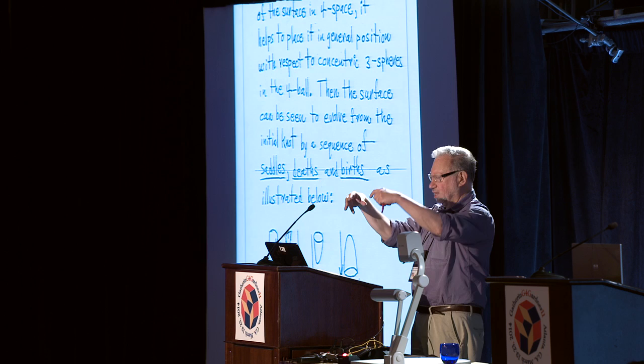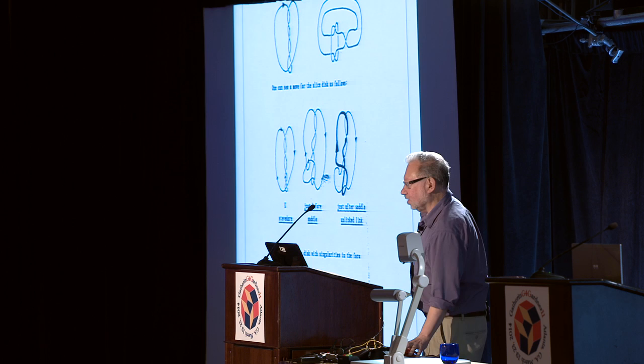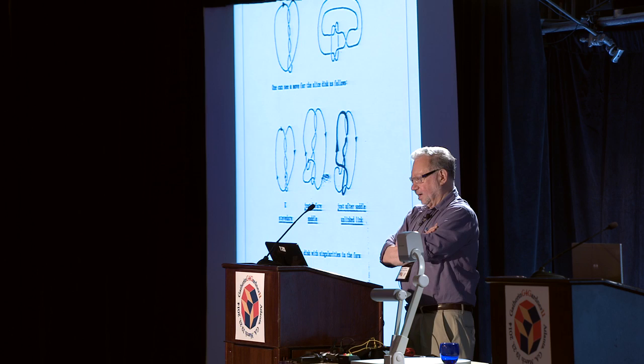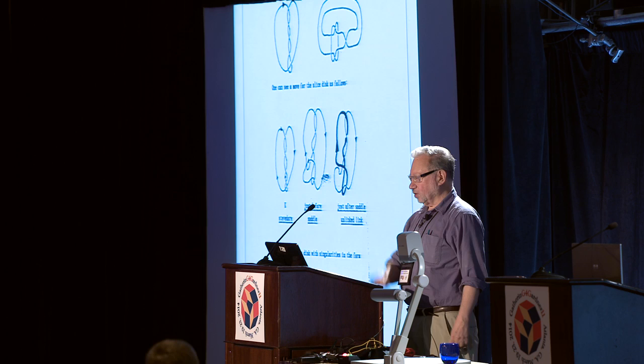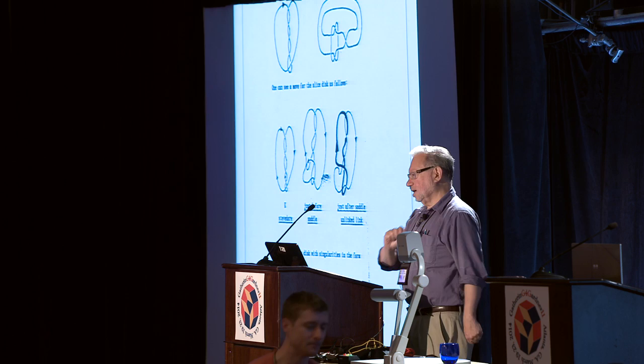Here's another example of slicing. Here's a stevedore's knot on the left, and I've shown you a slicing disk on the right — if you were to deform the stevedore into the one on the right at the top of the slide, it forms a disk.